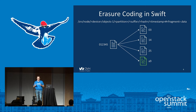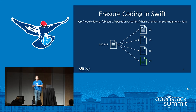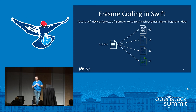Erasure coding is a bit different: your object will not be written many times in the cluster, but will be split into different fragments, and some parity fragments will be added. In this example, my object — which is still six bytes — will be split into three data fragments and one parity fragment will be added. This means you can control the overhead of your policy. Unlike replication factor of three with overhead of three, here we only have an overhead of 1.3. But the durability is not very good with this configuration — if we lose two devices, the object is no longer available.